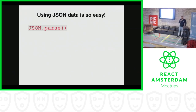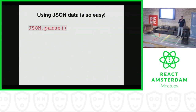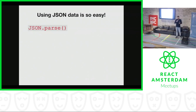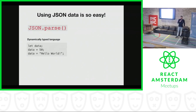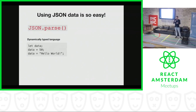Another thing that's super straightforward is working with JSON data. You probably all know this function — you can use it to parse your JSON into a JavaScript object and use that object throughout your whole app. This is possible because JavaScript is a dynamic type language, which means that if you have a property, it doesn't really have a type. It can be a number and later it can be a string.